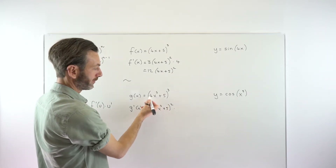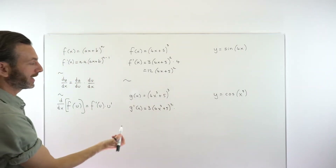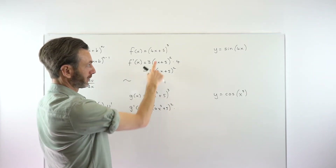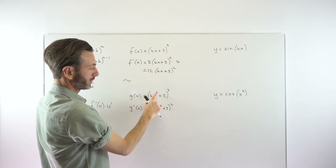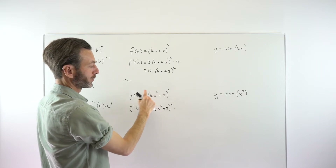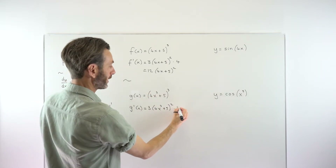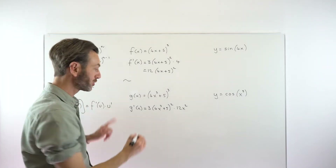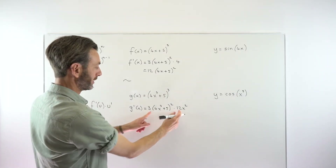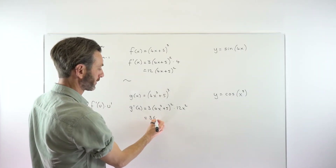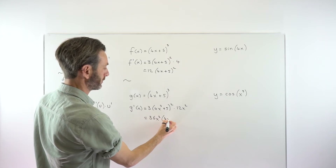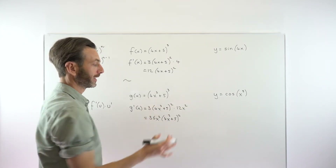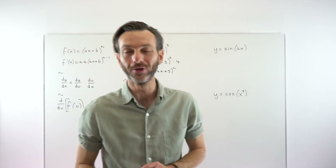Now we multiply by the derivative of the inside — the u dash part. This time the derivative is 12x^2, which plays the role of u dash. Tidying up, 3 times 12x^2 gives 36x^2 times the bracket part. Again, just a derivative multiplied by another derivative — that's all the chain rule is.